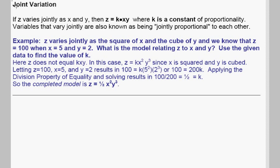Another kind of variation is joint variation. If z varies jointly as x and y, then z equals k times xy, where k is our constant, our constant of proportionality. Sometimes variables that vary jointly are also known as being jointly proportional to each other. For example, if z varies jointly as the square of x and the cube of y, the relationship we get is z equals kx squared y cubed.